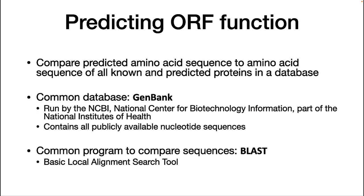Now that we have the ORFs and we are pretty confident that they really code for genes, we want to find out the function of all these proteins. Luckily, there is a huge amount of knowledge that scientists have accumulated over many decades about proteins, and this knowledge is all housed in the database GenBank. We simply compare each ORF sequence to sequences in GenBank. If the ORF sequence is similar to a sequence in GenBank, it likely has a similar function, and the likelihood increases as the homology increases. Because the databases are getting so huge, most programs compare to a subset of GenBank proteins containing common representative sequences for each type of protein.